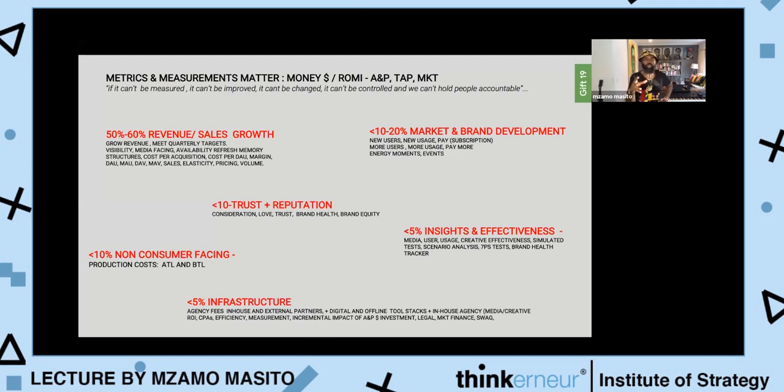I was asked recently how to split your media or marketing, advertising, and promotion spend. The thinking for me is there must be a core chunk on revenue and sales, because we're in the business of growing revenue and sales. Then there must be a chunk for brand lift and marketing development, a chunk for trust and reputation, and a chunk for insights—learning about the consumer and effectiveness.